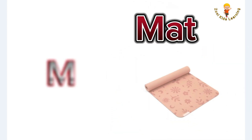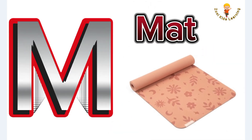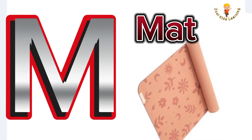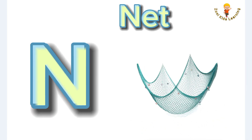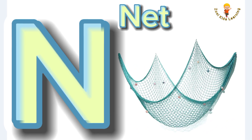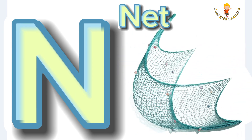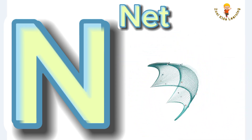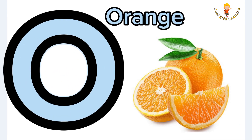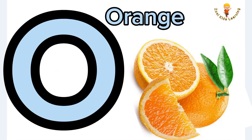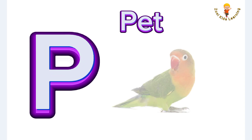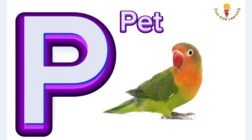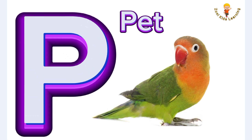M is for mat, m-m-mat. N is for net, n-n-net. O is for orange, o-o-orange. P is for pet, p-p-pet.